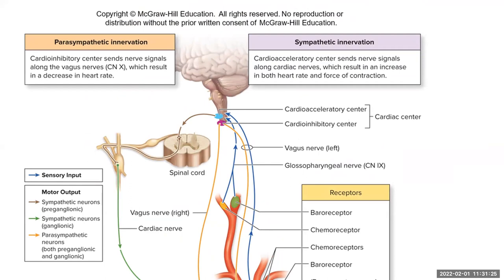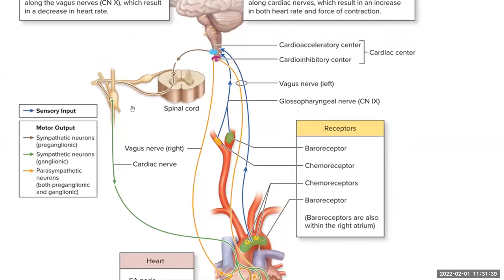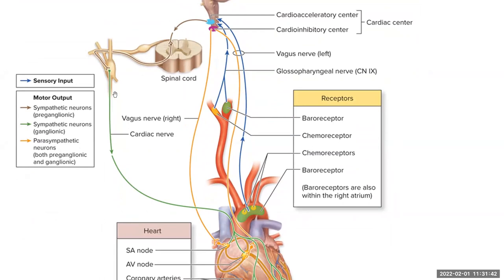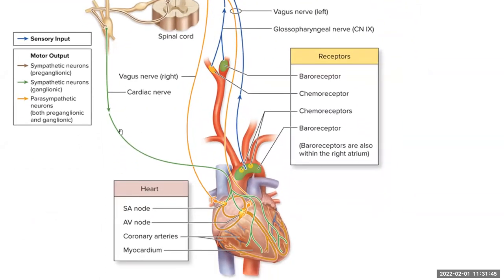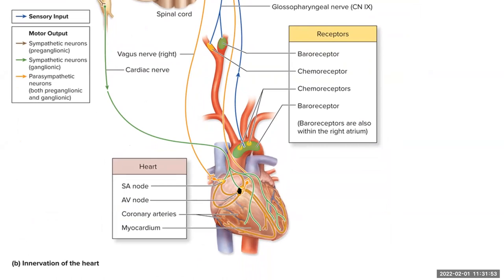That information is sent up to the control center in the medulla oblongata — the cardiac center. Depending on what's going on, if your blood pressure is falling, we want to increase it. One way is to increase the heart rate. The sympathetic nervous system sends information down through spinal cord segments T1 through T5 to the various structures in the heart — SA node, AV node, through the myocardium, and through the coronary arteries — to help increase our blood pressure by contracting the heart more.